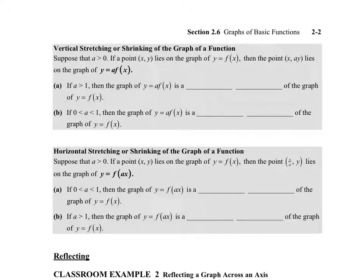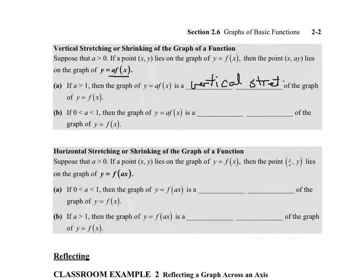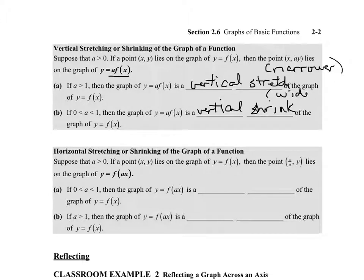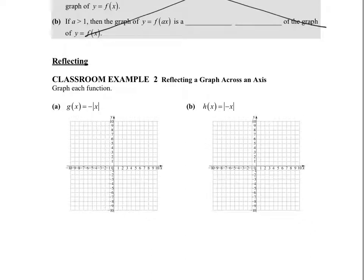Here is a summary of what we just explored. If we have some function with the coefficient a in front of it, then as long as the a value is greater than one, the function is a vertical stretch of the original. But if the a value is between 0 and 1, then it would be a vertical shrink. A vertical stretch makes it look more narrow, while a vertical shrink makes it look wider. We will skip the horizontal part and move on to reflections.